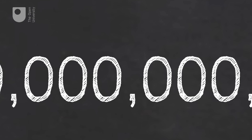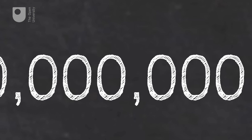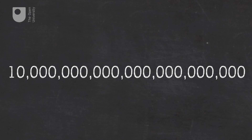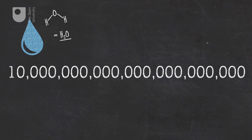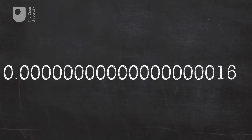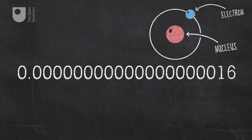Big numbers like this are cumbersome and difficult to read. If scientists had to read or write them out in full when discussing things like the molecules of water in a swimming pool or the distance to the Orion Nebula, it would take up pages of books. The same is true of very small numbers — like the charge on a single electron — where you can spend so much time counting zeros you lose track of what the number was about.